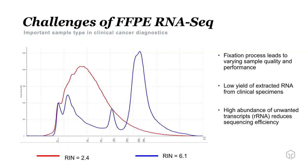Here is a tape station profile of two RNA samples — both are lung samples from two different sites. The sample in blue has a RIN score of about 6 and you can actually see some ribosomal peaks and high molecular weight RNA. But the sample in red is mostly very small molecular weight material and has a RIN of 2.4, showing a lot of variability in sample quality. This is very challenging in the clinical setting — we have limited tissue, low yield of extracted RNA, and high abundance of unwanted transcripts such as ribosomal RNA, which can really reduce sequencing efficiency.